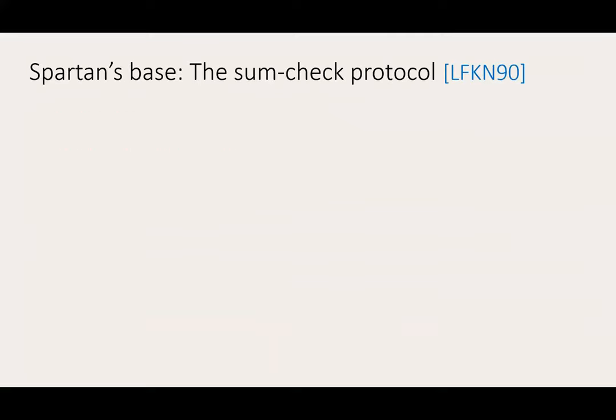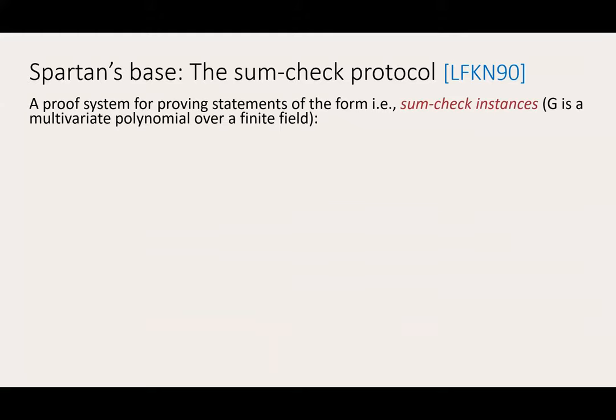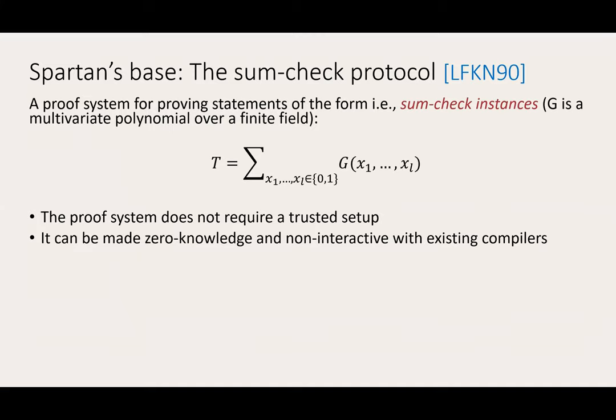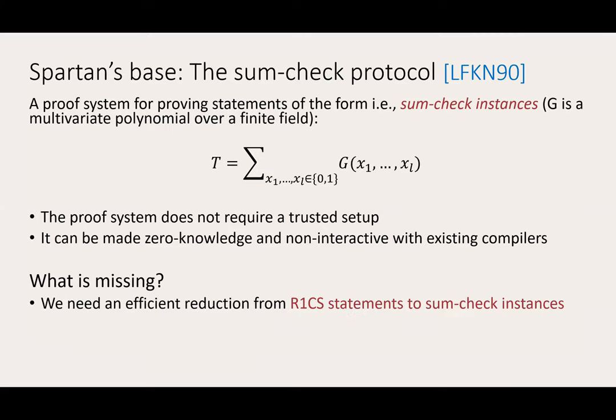SPARTAN's foundation is the SUMCHECK protocol, which is a seminal interactive proof protocol. It's a proof system for proving statements of the form depicted on the slide, where G is a multivariate polynomial over a finite field. This proof system does not require a trusted setup, and it can also be made zero-knowledge and non-interactive using existing compilers. Unfortunately, it does not lead to a ZK-SNARK without trusted setup for two reasons.